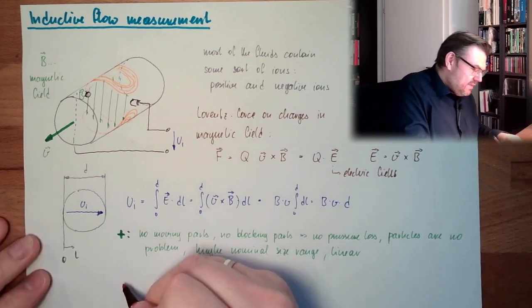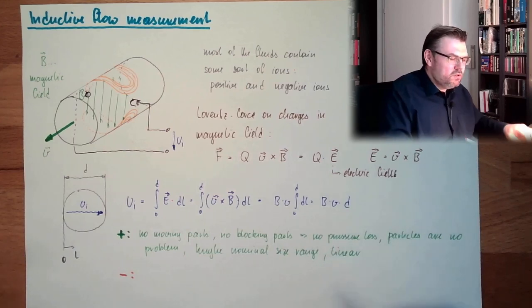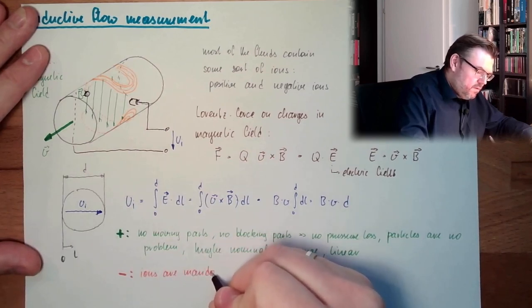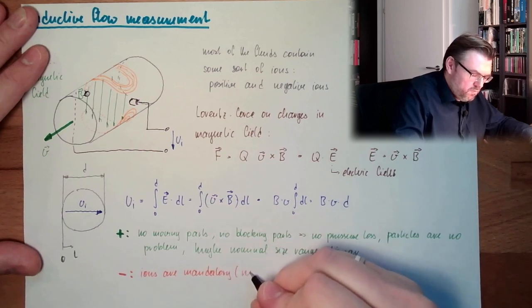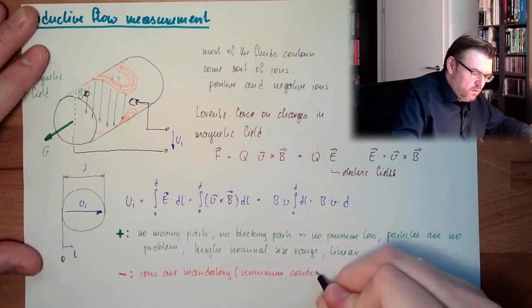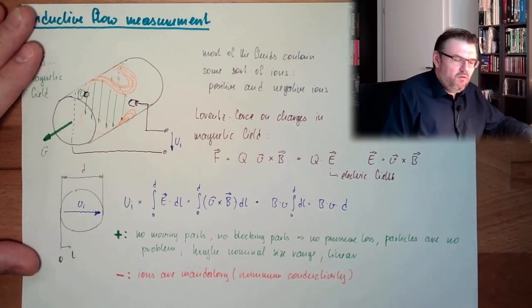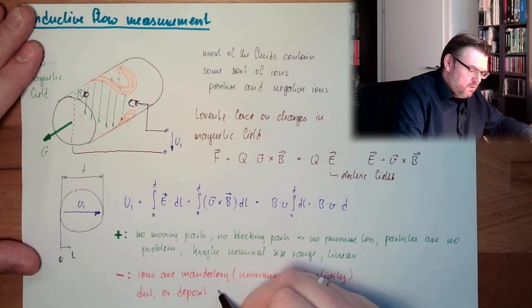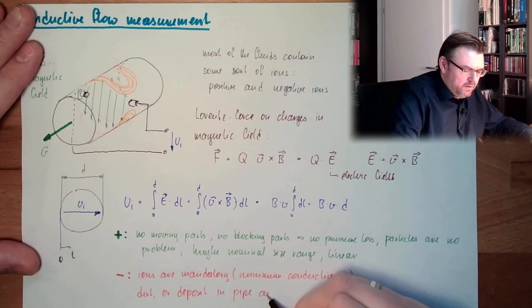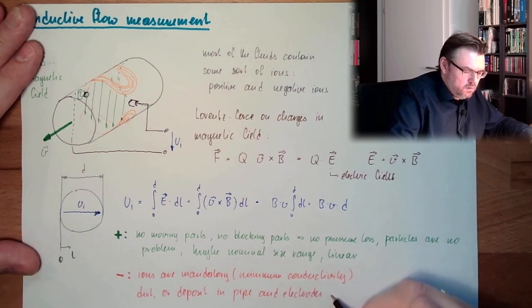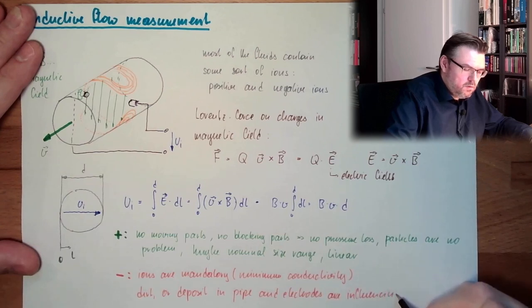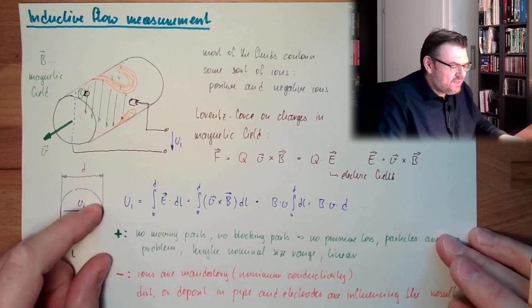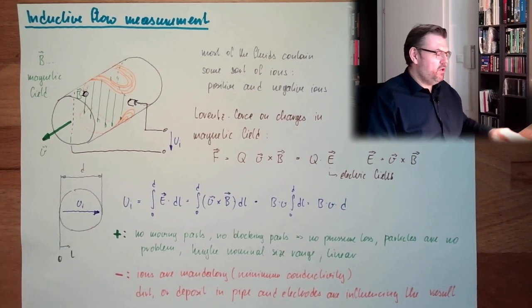What are the minus sides? Well, I need ions. I said most of the fluids, not all. Ions are mandatory. So we have a minimum conductivity of our fluid. Then dirt or deposit in pipe and electrodes are influencing the result. If there is some crust or something like this on this, I cannot measure the internal voltage too good.